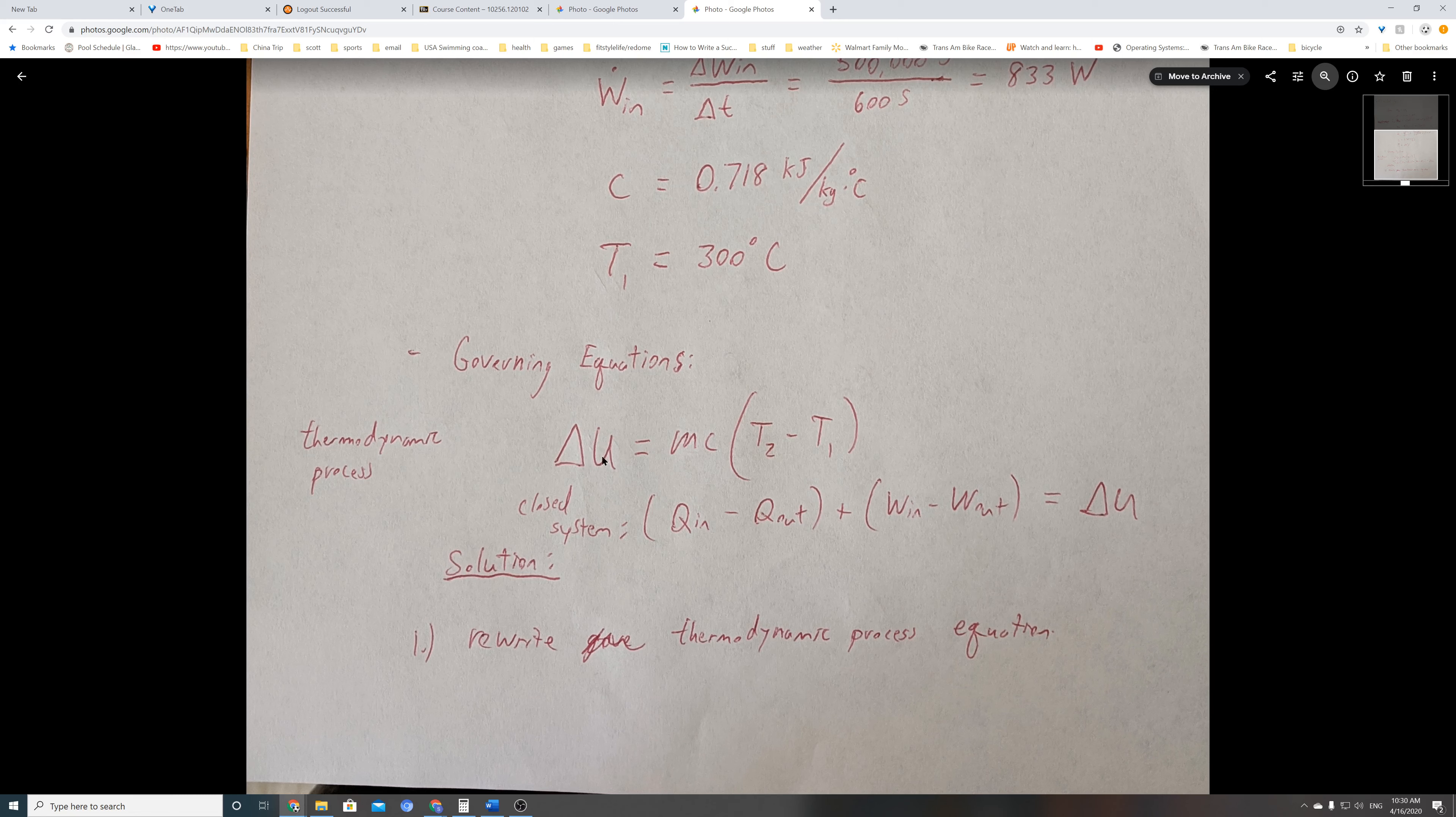We're going to need this equation because we need to find Delta U, or the change in internal energy. For a closed system, the first law of thermodynamics is: heat in minus heat out plus work in minus work out equals the change in internal energy.